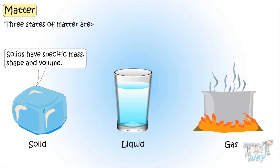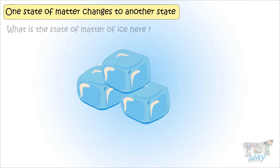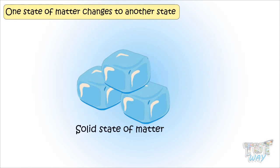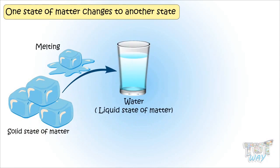Now let's see how one phase of matter changes to another state. Here we have some ice. Ice is in which state of matter? It is solid state of matter, but when it's heated, it changes into water, which is liquid state of matter.